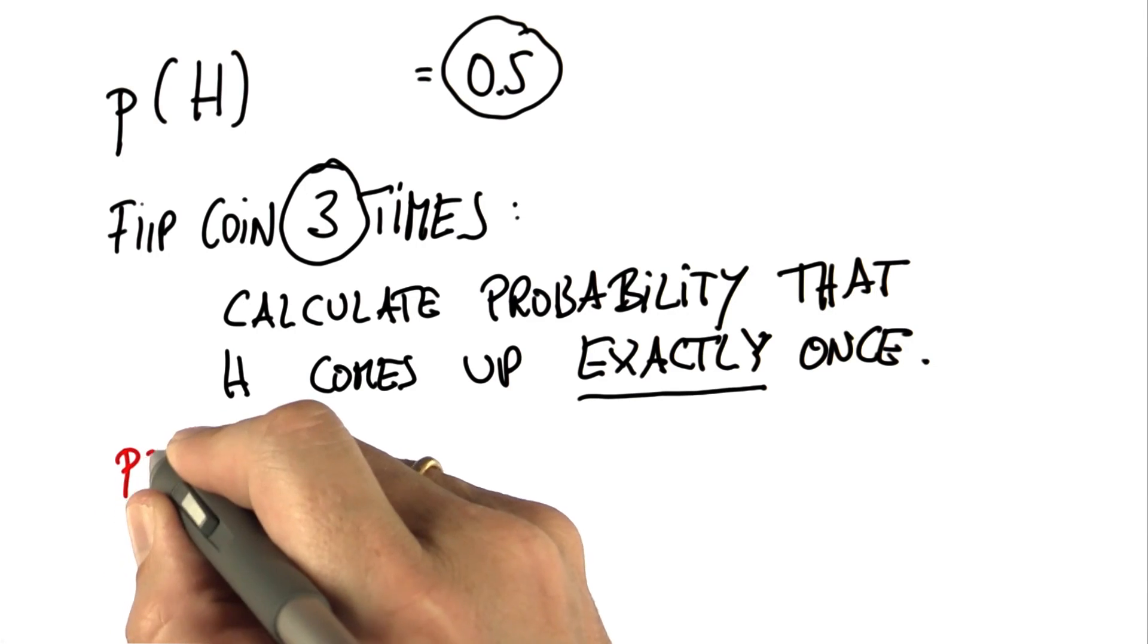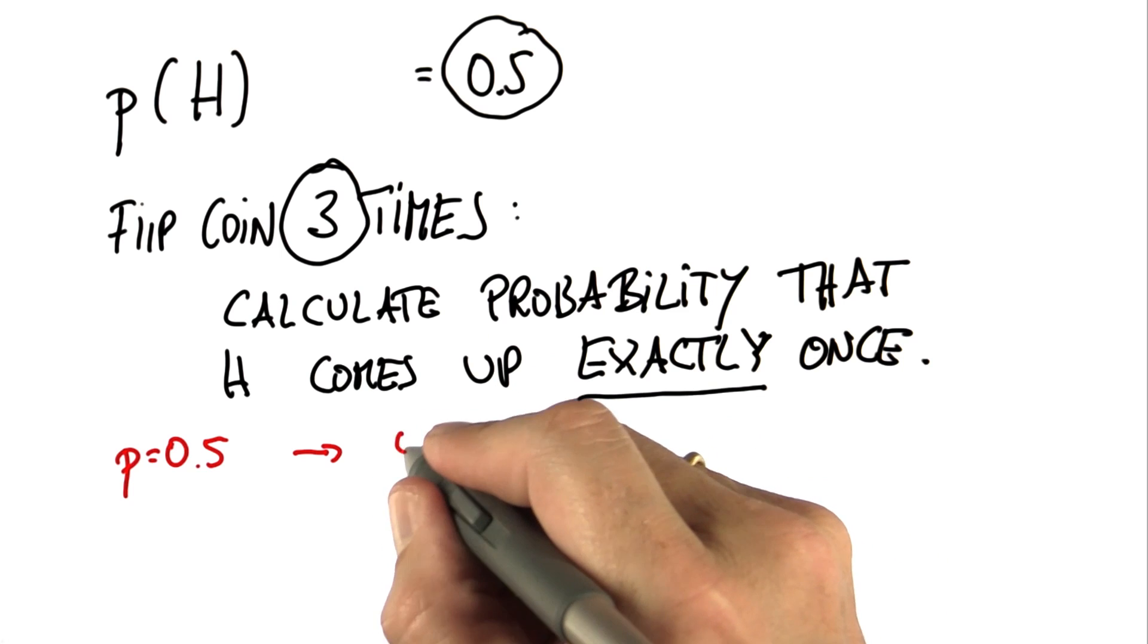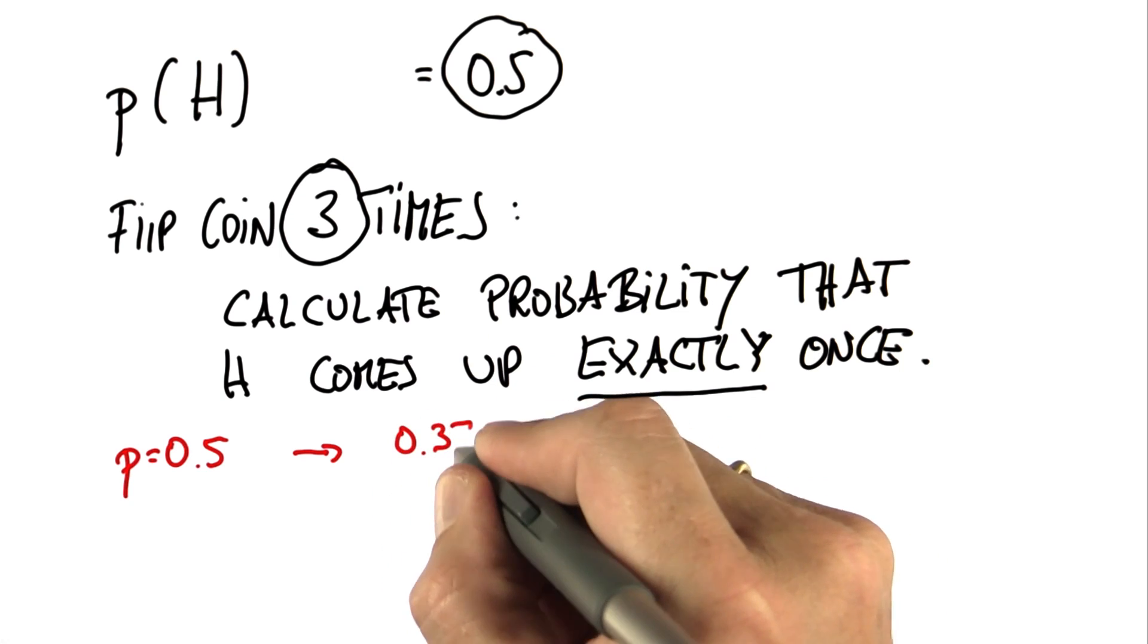You might remember for p equals 0.5, when you go through the truth table you find the answer is 0.375.